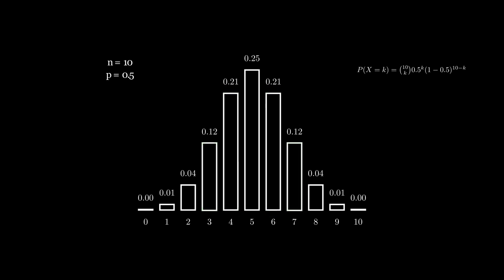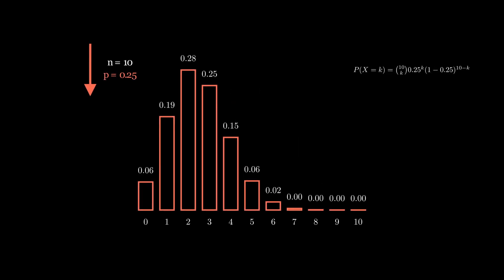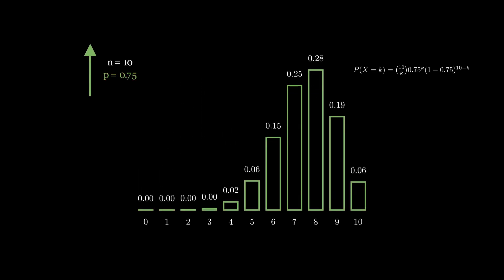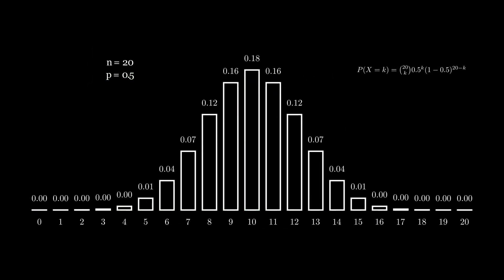Let's see what happens as we modify the probability of success p. If we lower p to 0.25, meaning the probability of getting a success is half as likely, we can see that our distribution skews towards having fewer successes. Notice that the shape of the distribution remains normal. Conversely, if we change p to 0.75, we can see that the distribution heavily skews to having more successes. If we elongate the number of trials n to something like 20, we can see the same normal-looking distribution, just a bit wider.